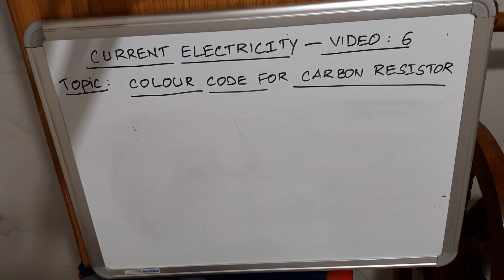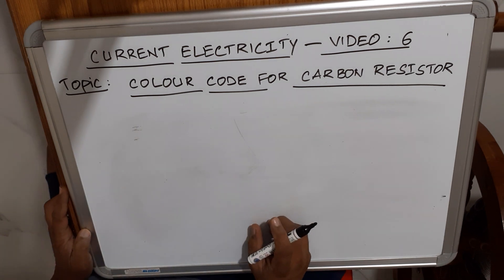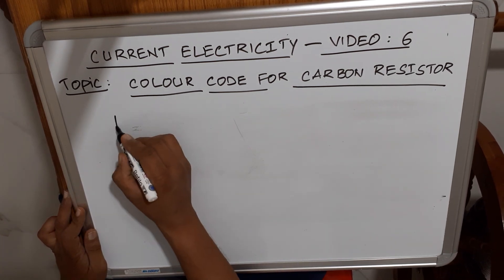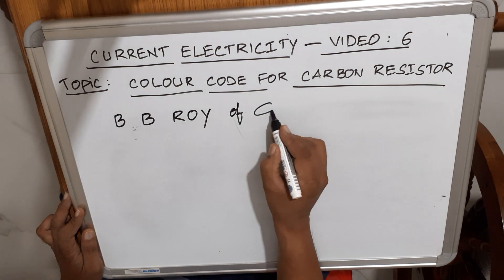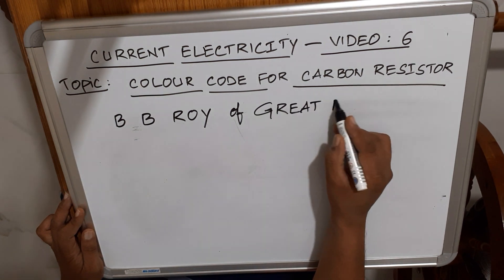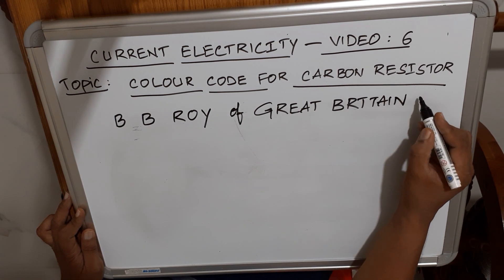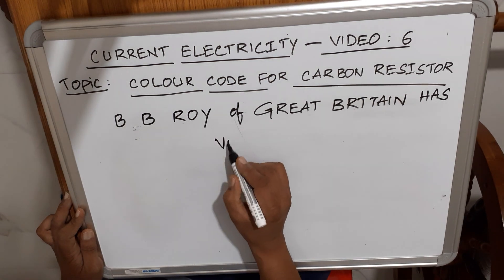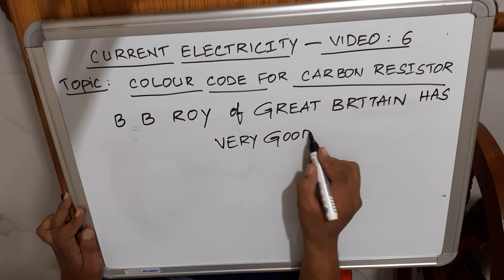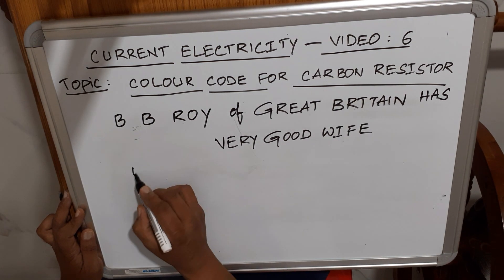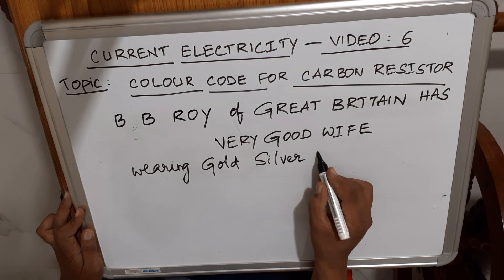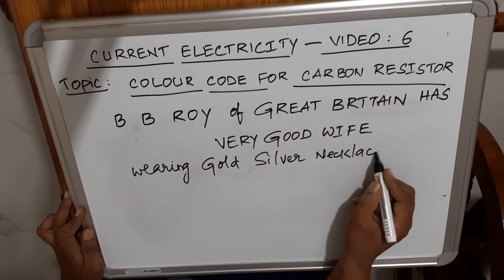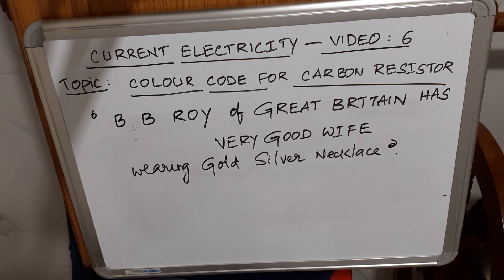To remember the color code system and the sequence of colors, we remember the sentence: 'BB ROY of Great Britain has Very Good Wife.' This mnemonic helps recall the color sequence.